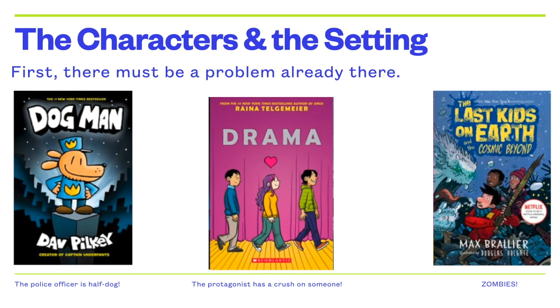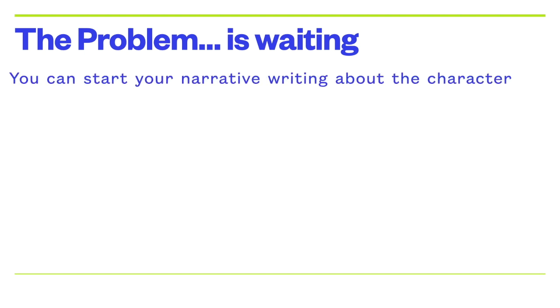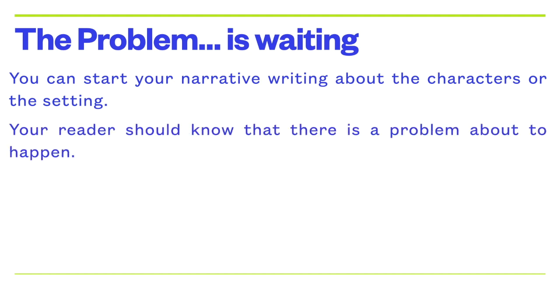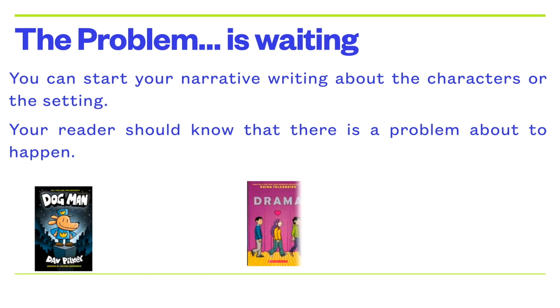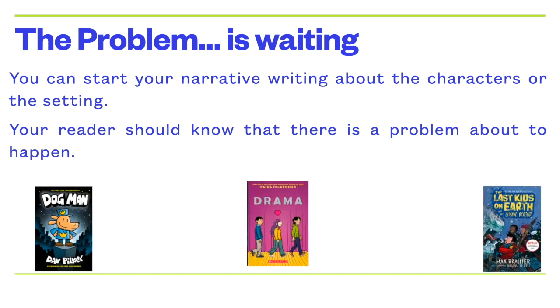So before you started reading, the problem was already there. The problem is waiting. You can start your narrative writing about characters and setting, and your reader should know that there's a problem about to happen. Whatever style you want to use, it's still the same — the problem is just about to happen based on the problem sitting there waiting. But now the problem has to get worse, and there are a few ways we can go about making the problem worse.